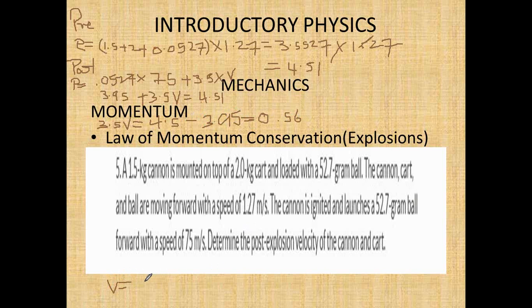So V equals 0.16 meters per second. The approach, whether it's an explosion or a collision, is the same: the pre-collision or pre-explosion momentum equals the post-collision or post-explosion momentum. Momentum is conserved. You have to use vector summation to analyze these problems because direction is very important. This concludes our momentum lecture — we went over all aspects of momentum and momentum conservation.